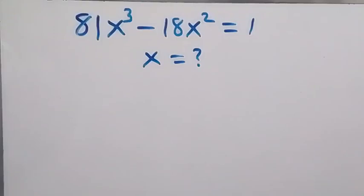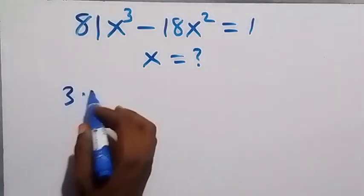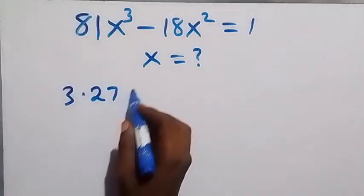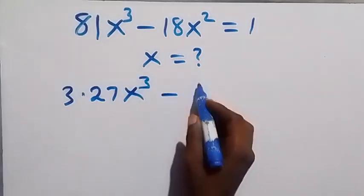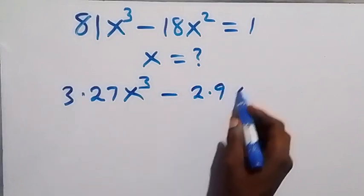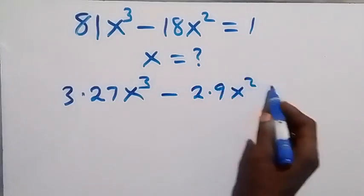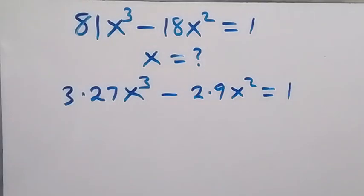Hello, you are welcome here. We are solving a nice algebra problem, finding the value of x. We can write this as 3 times 27 times x raised to power 3 minus 2 times 9 times x raised to power 2, which equals 1.